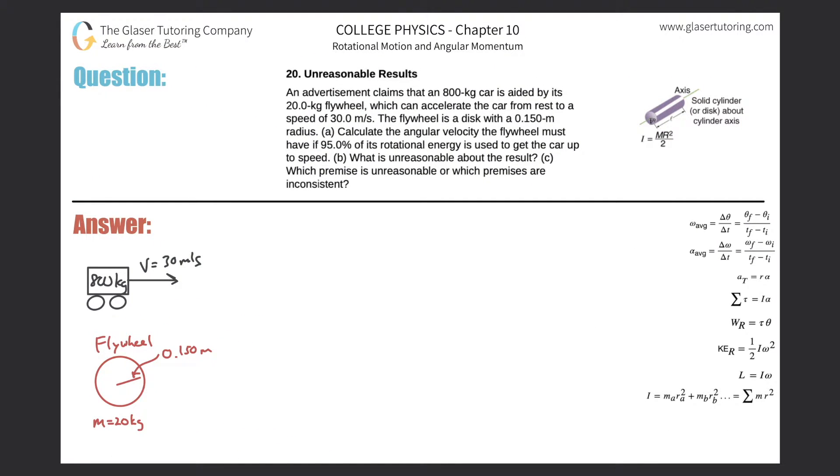Number 20: Unreasonable Results. An advertisement claims that an 800 kilogram car is aided by its 20 kilogram flywheel which can accelerate the car from rest to a speed of 30 meters per second. The flywheel is a disc with a 0.15 meter radius. Letter A: Calculate the angular velocity the flywheel must have if 95 percent of its rotational energy is used to get the car up to speed.